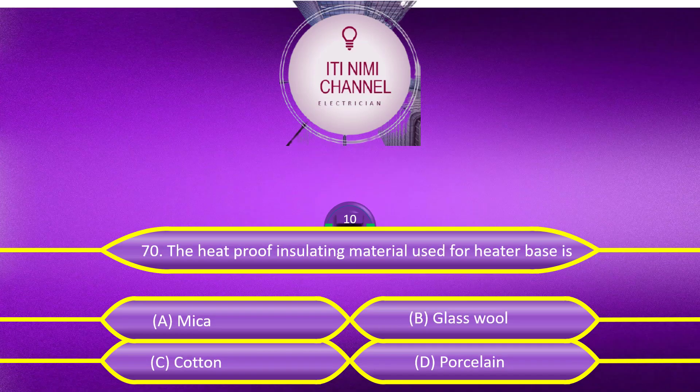The heat-proof insulating material used for a heater base is: Option A, mica; Option B, glass wool; Option C, cotton; Option D, porcelain. The answer is Option D, porcelain.